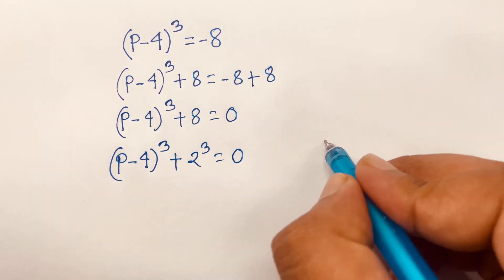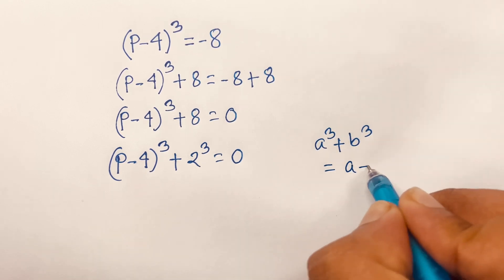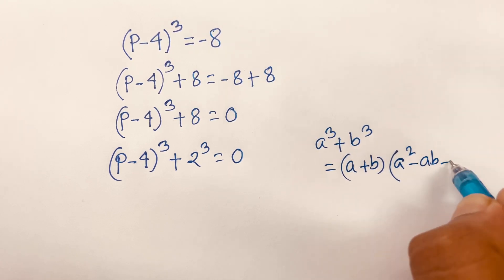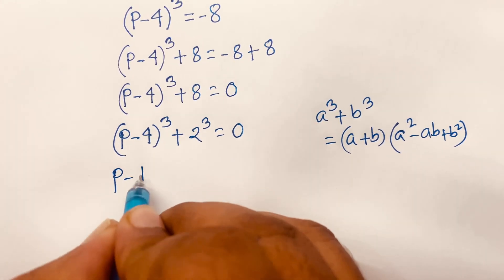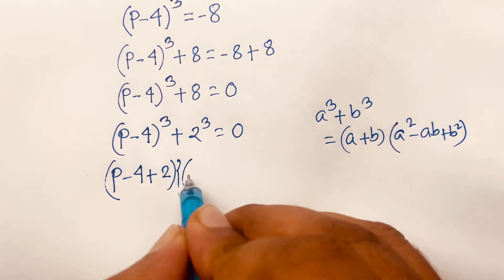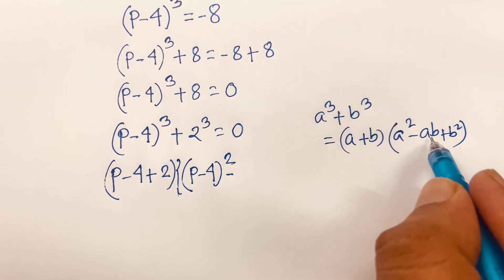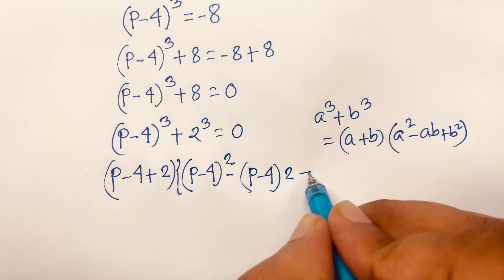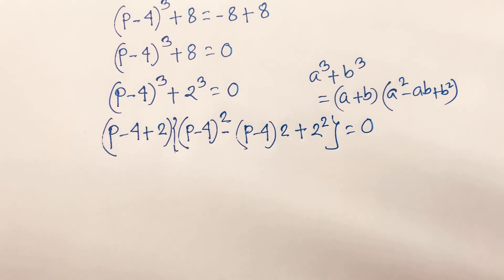We know that a³ plus b³ equals (a plus b)(a² minus ab plus b²). Applying this formula with a = (p minus 4) and b = 2, we get: (p minus 4 plus 2) times [(p minus 4)² minus (p minus 4)(2) plus 2²] equals 0.